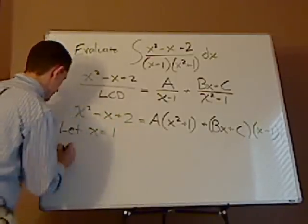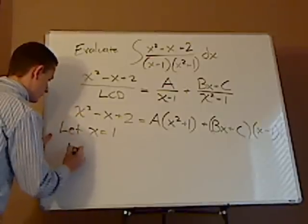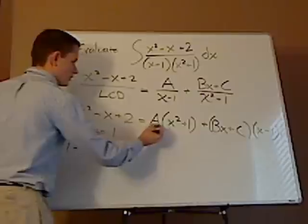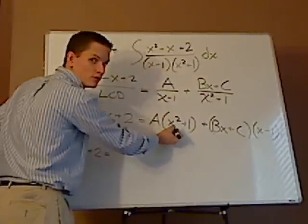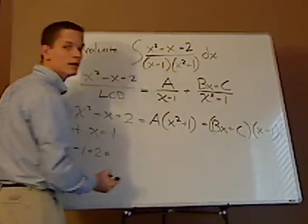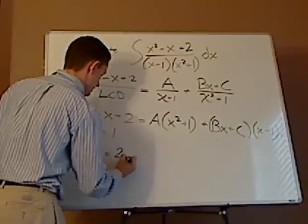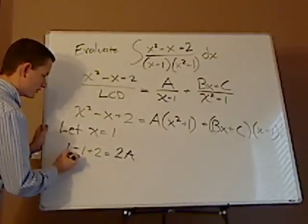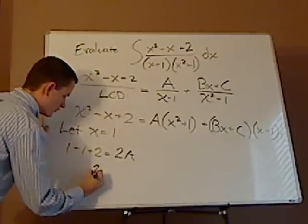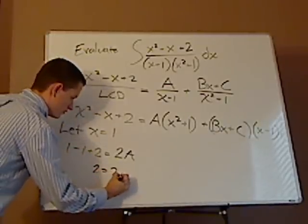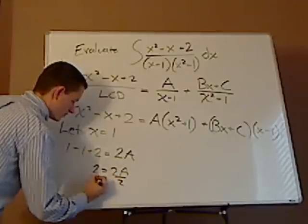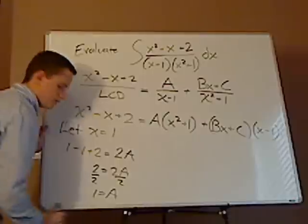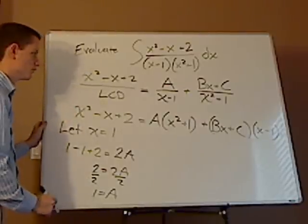When I do that, I get, on this side, I get 1 minus 1 plus 2 equals 1 squared is 1, plus 1 gives me a 2. So that's 2a. When I simplify this, this cancels out. I'm left with 2 equals 2a. I divide both sides by 2, and I get a equals to 1, or a equals 1.